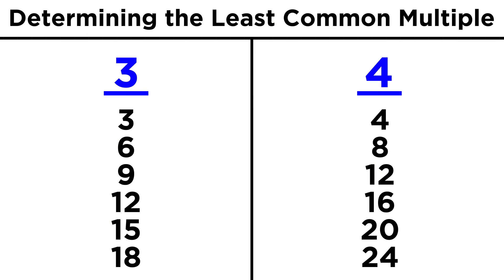So what if we compare three and four? We might want to know the smallest number that is in both of these lists. We would call this the least common multiple, because it is the smallest multiple that is common to both numbers. In this case, that's twelve.